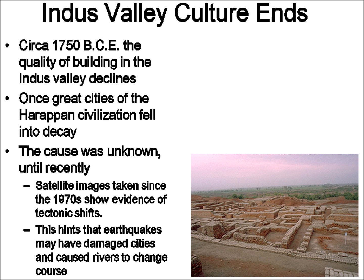Eventually the Harappan civilization was abandoned and fell into decay. We don't know what the cause was. Recently — well, in terms of the 1970s, being fairly recent in world history — satellite photos were made available. Once we started getting satellites up there and taking pictures, we began to notice things about geography and geology. There are signs that about the same time period that the Indus River valley cultures began to dry up — pardon the pun — the rivers may have changed direction due to earthquakes up towards the Himalaya mountains. It's still a mystery, but as our technology improves, hopefully we'll acquire more information about it.